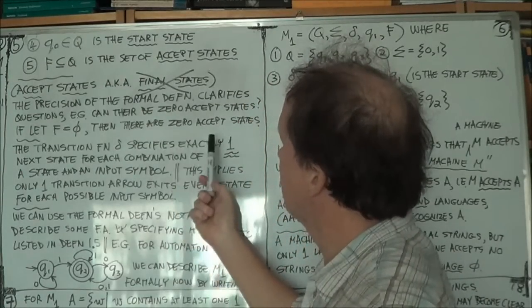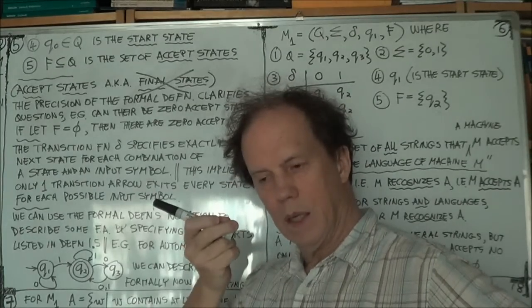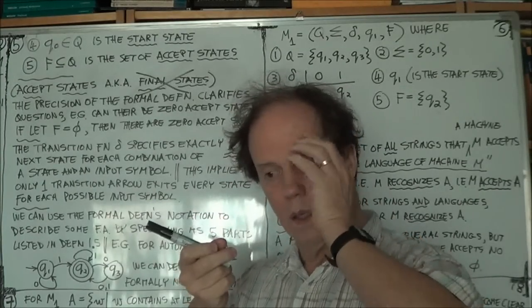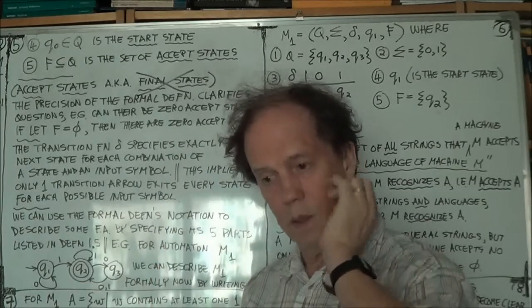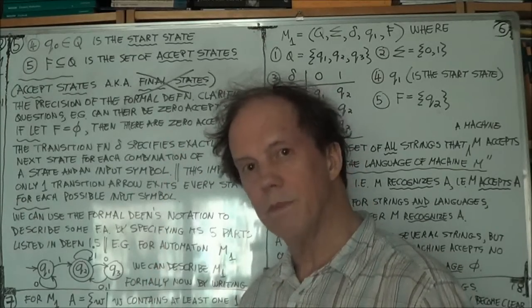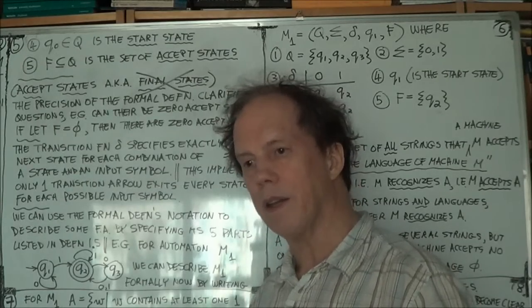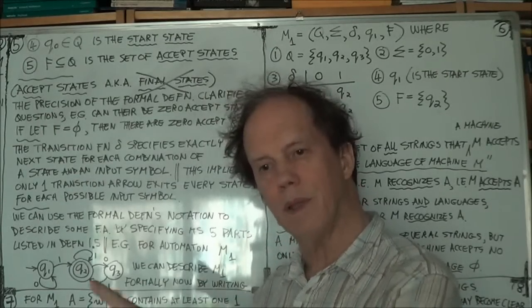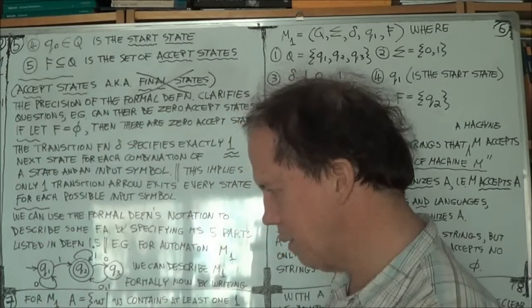And the other question we were asking was for a given current state, and a given symbol that you're currently reading in the input string, can you have more than one next state? And the answer is no. It has to be one.